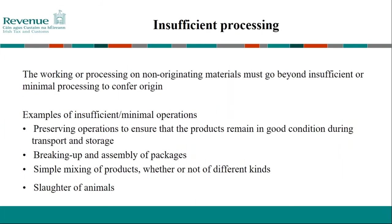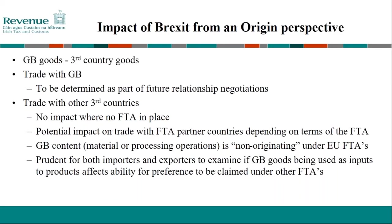In terms of insufficient processing, these are examples where non-originating material would not obtain EU originating status. Examples of insufficient processing include preserving operations, breaking up an assembly of packages, simply mixing products whether or not of different kinds, and slaughtering animals — which does not actually change the origin of the product.